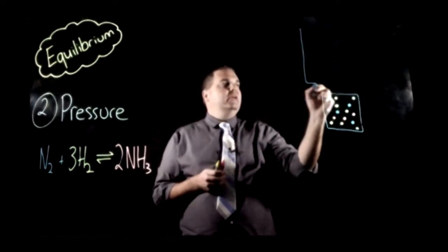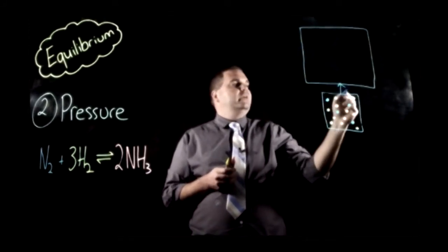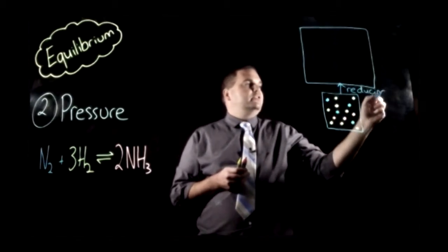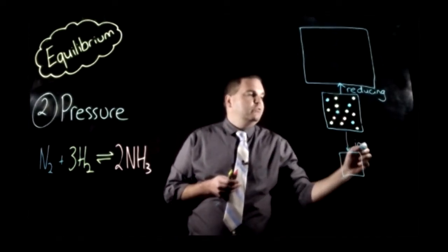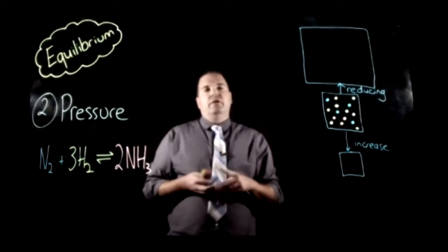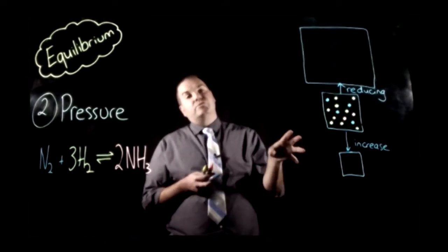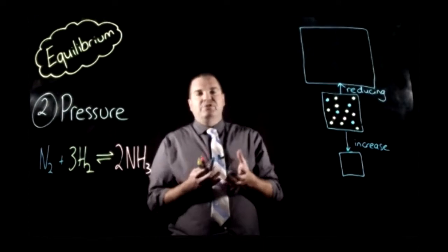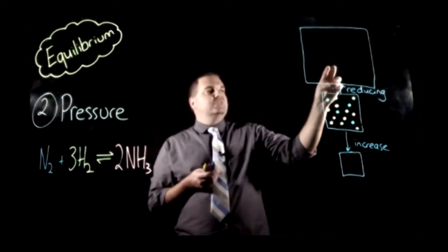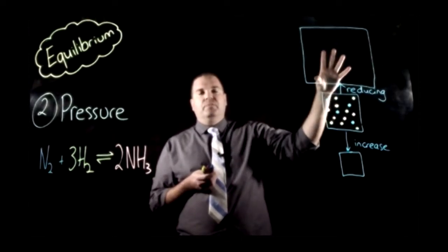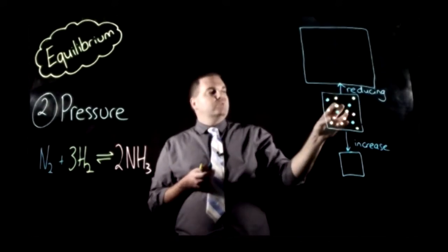If we enlarge our container, what we're doing is reducing the pressure - it's a decrease in pressure. If we make it really tiny, what we're doing is increasing the pressure. So what will happen is that these molecules will go inside either of these containers and then they will react in order to try and re-establish the initial equilibrium that they had. If we're reducing the pressure, we want more particles because we want to exert the same pressure in a larger area.